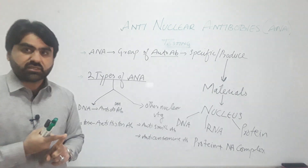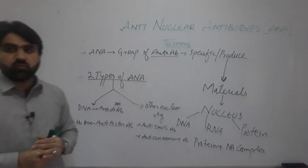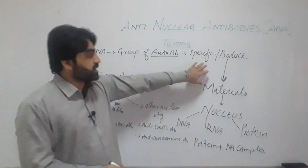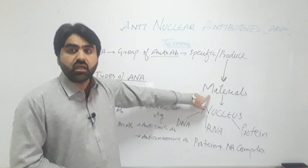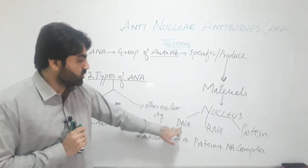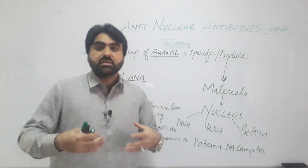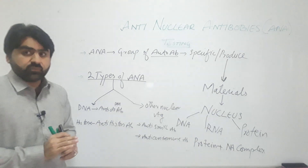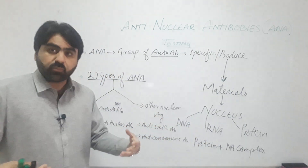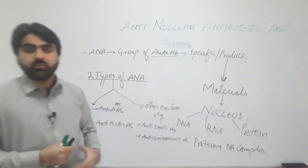What is an anti-nuclear antibody? An anti-nuclear antibody is not a single antibody — it is a group of autoantibodies which are specific or produced against different materials or components present inside the nucleus of the cell. These components include DNA, RNA, protein, or protein-nucleic acid complexes. So anti-nuclear antibodies are different antibodies produced against DNA, RNA, protein, or DNA-RNA-protein complexes present inside the nucleus of the cell.